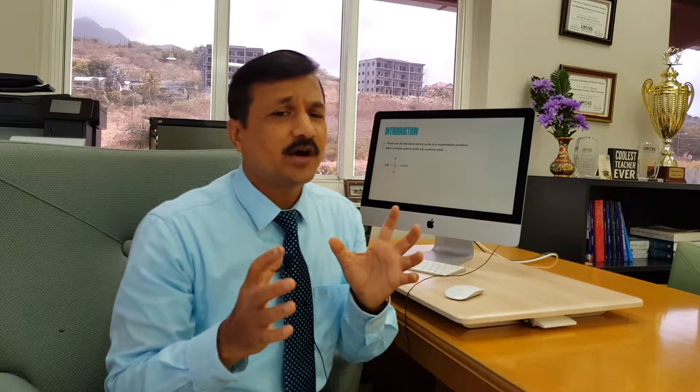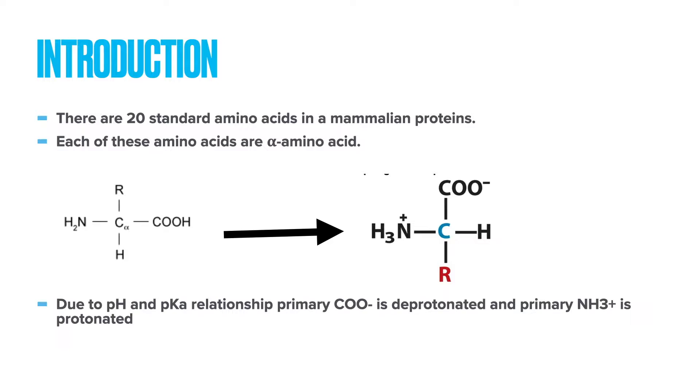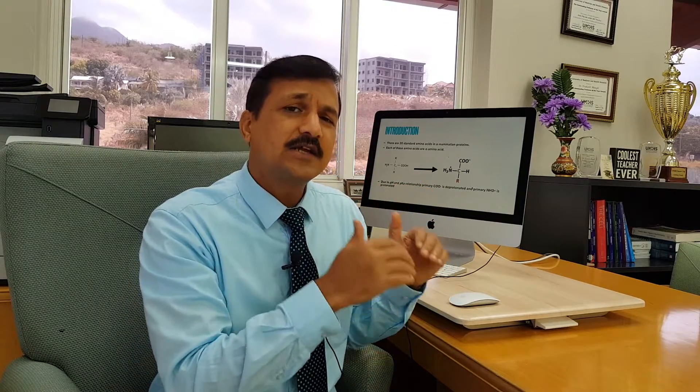Under physiological pH of 7.4, the average pK of the primary carboxyl group is around 2, and the average pK of the primary amino group is 9.5. Because of this pH-pK relationship, what happens to individual amino acids when present in the bloodstream? The primary carboxyl group will undergo deprotonation and the primary amino group will undergo protonation. I have a video on the pH-pK relationship of an amino acid explaining why this occurs. The link is in the description below and also appearing in the upper right corner.